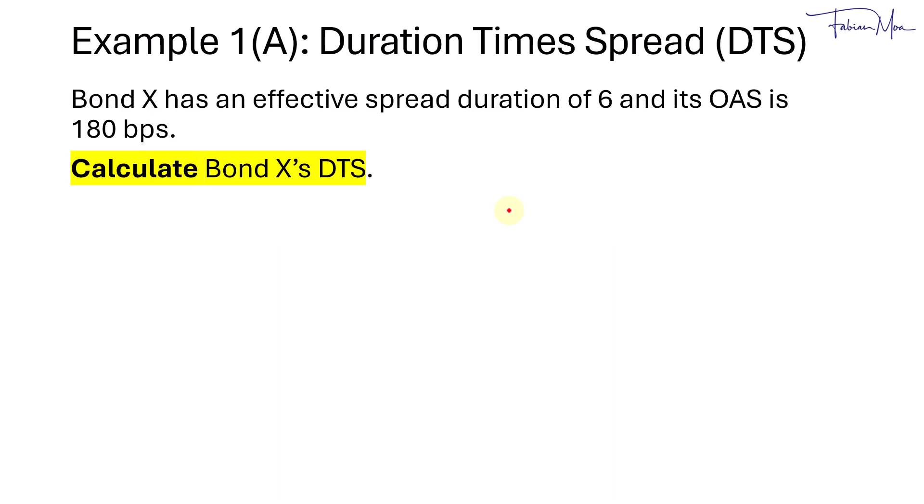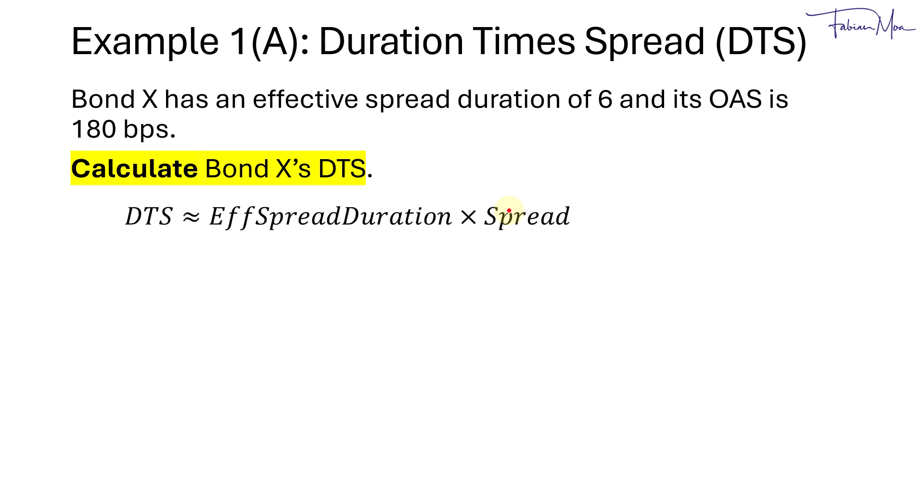In Example 1, we have Bond X with an effective spread duration of 6 and an OAS of 180 basis points. To calculate Bond X's DTS, we take the effective spread duration of 6 multiplied by its spread — the OAS — of 180 basis points, and we get 1080.